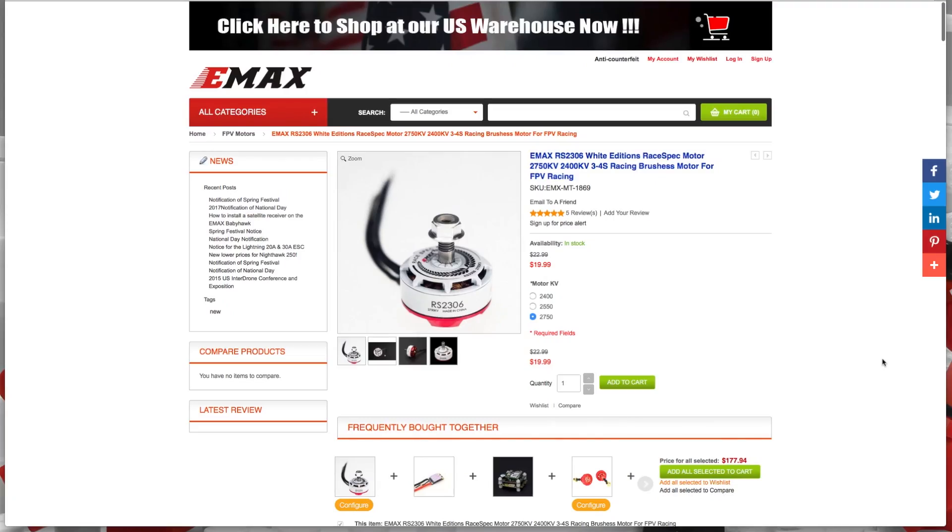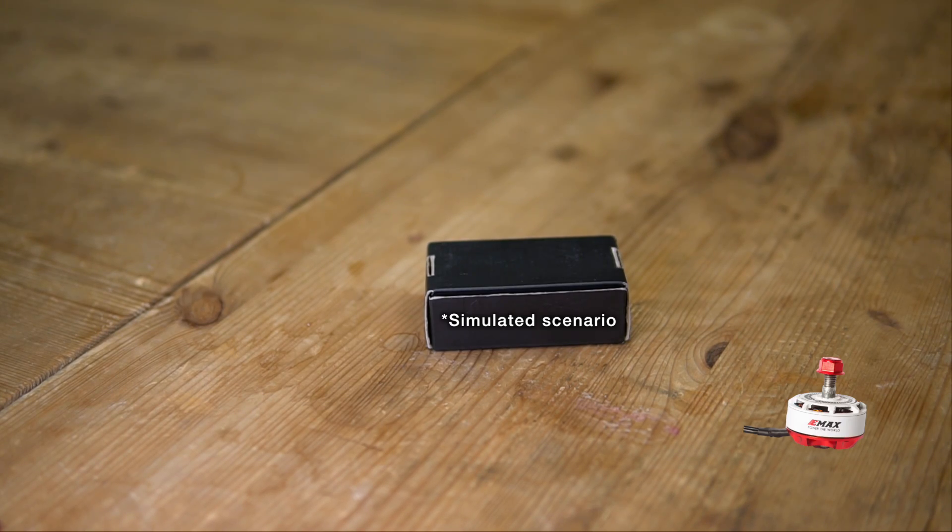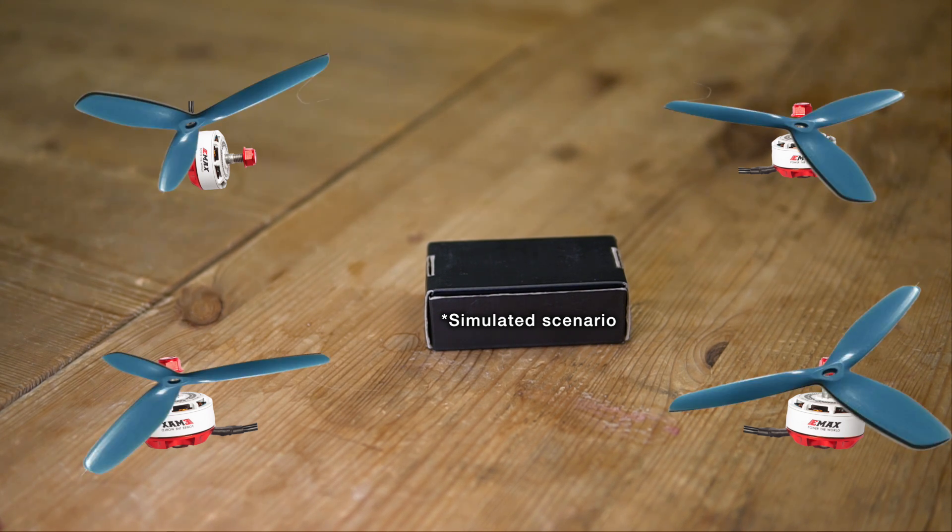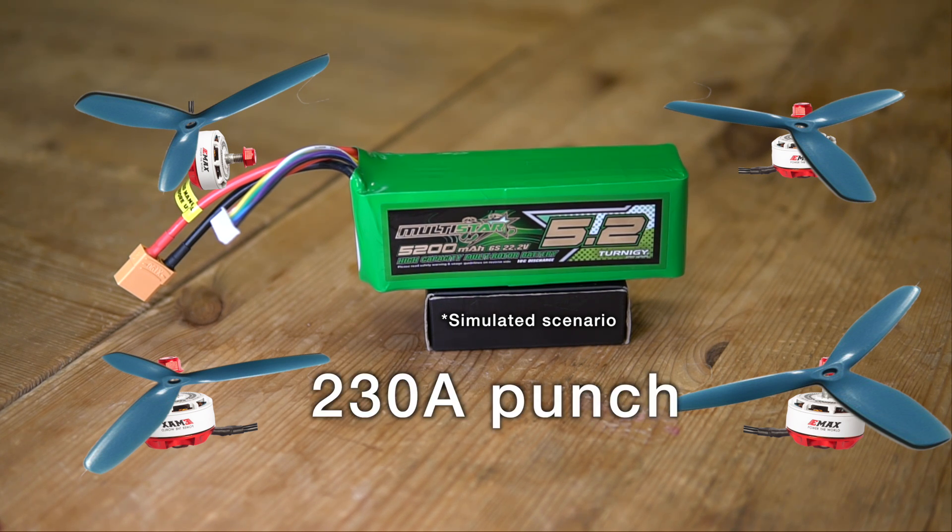if you go ahead and get yourself a set of Emax RS2306, 2750 kV for example, slap on an aggressive GF 5050 tri-blade propeller and run on a 4S, at maximum throttle you would reach a whopping 230 amperes.